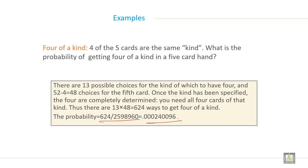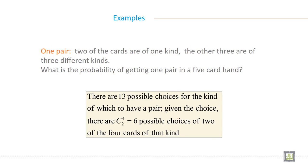The probability is 624 divided by 2,598,960. So then you will get probability like this: 0.000240096. This is the probability.